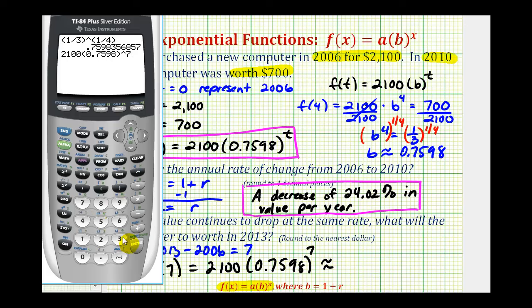Raised to the seventh power. So if the value of the computer continues to drop at the same rate per year, in the year 2013, the computer will be worth approximately $307.